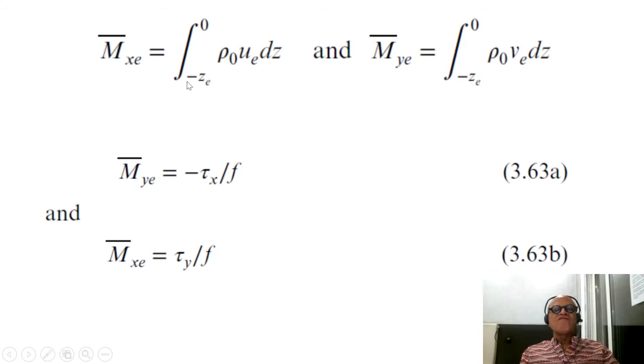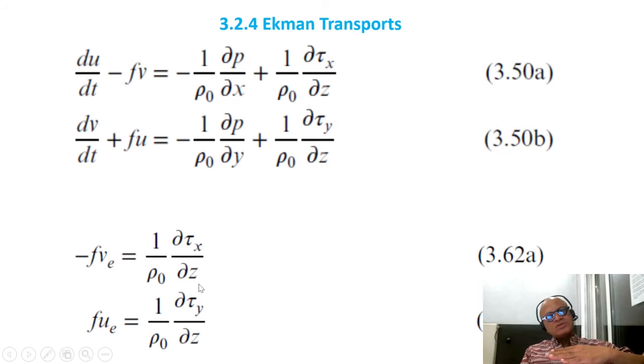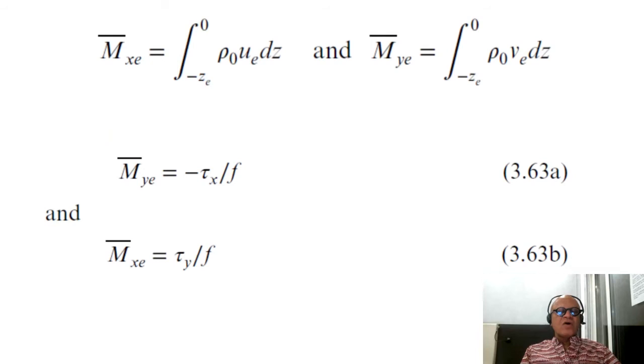And then he integrated the Ekman transports now going from some depth z_e where the wind stress would go to zero and then to the surface where you meet the surface conditions. Unlike the Sverdrup transport where you went to the level of no motion, here you are just going to some depth where the wind stress would disappear. And using this equation here, integrating in the z, τₓ and τᵧ go to zero at z_e as well where you have vertical Ekman pumping that we saw before. And you integrate to the surface, you get the surface values of τₓ and τᵧ.